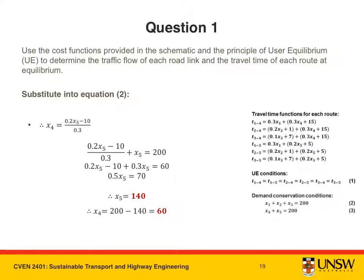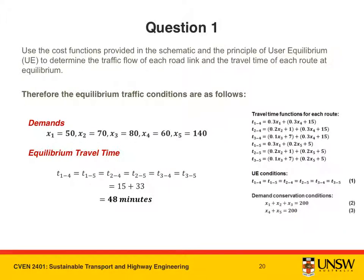At this stage we have determined the traffic flow of each link at equilibrium. All that is left is to determine the travel time of each route. Recall that the travel time of each route at equilibrium is equal to that of all other routes and represents the minimum origin-destination travel time. We can substitute the appropriate flow values into any of the travel time functions to arrive at the equilibrium travel time. Doing so gives us a travel time of 48 minutes. This concludes the worked example for traffic assignment.